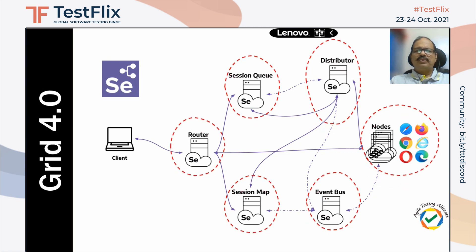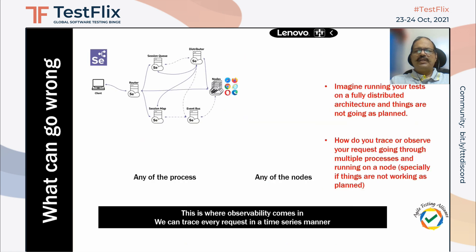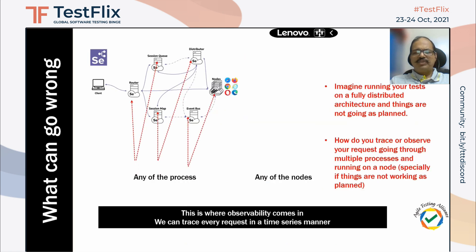Now, remember all these are moving components — they talk to each other. And this is where we say: if something goes wrong in any of these processes or any of these nodes, how do you know where things have gone wrong? That is where we need observability, or more specifically, traceability.